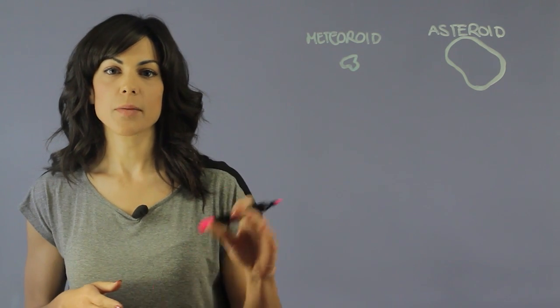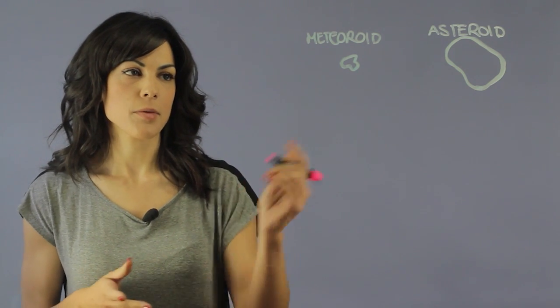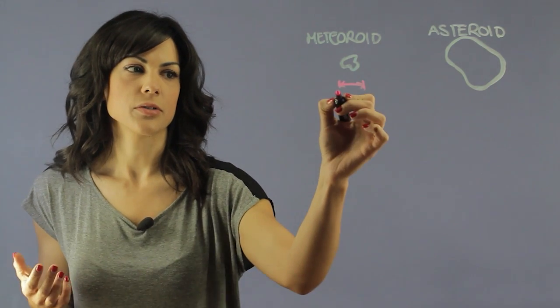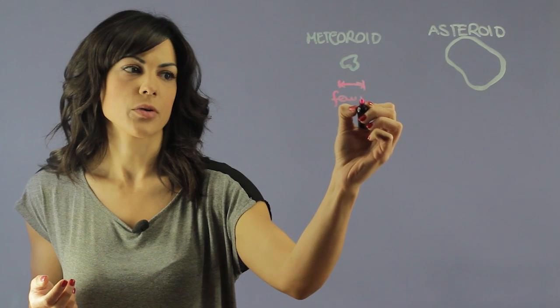So when you look at a meteoroid, a meteor is much smaller. They actually are generally a few meters across.